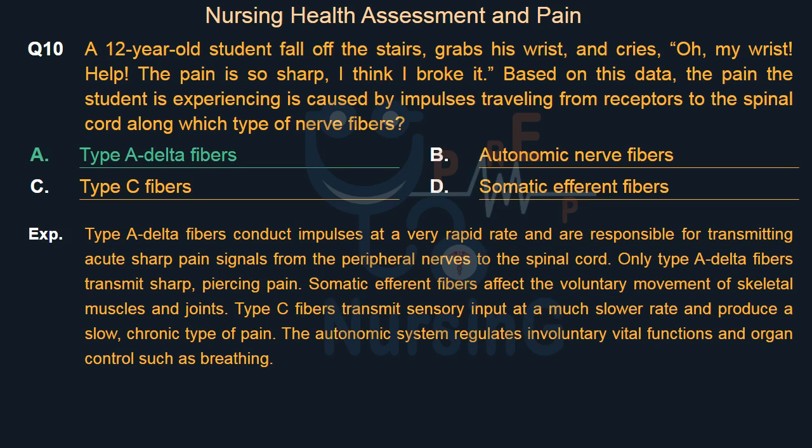Type A delta fibers conduct impulses at a very rapid rate and are responsible for transmitting acute sharp pain signals from the peripheral nerves to the spinal cord. Only Type A delta fibers transmit sharp, piercing pain. Somatic efferent fibers affect the voluntary movement of skeletal muscles and joints. Type C fibers transmit sensory input at a much slower rate and produce a slow, chronic type of pain. The autonomic system regulates involuntary vital functions and organ control such as breathing.